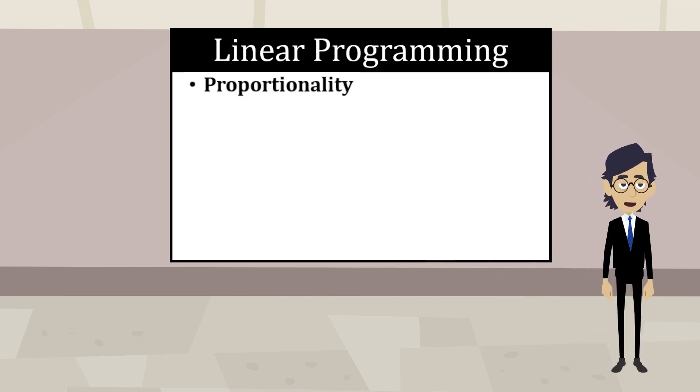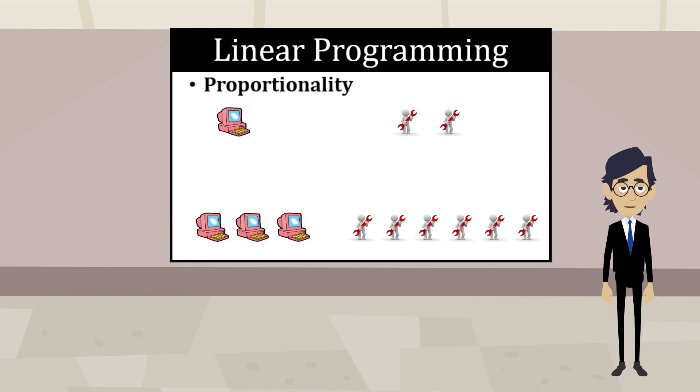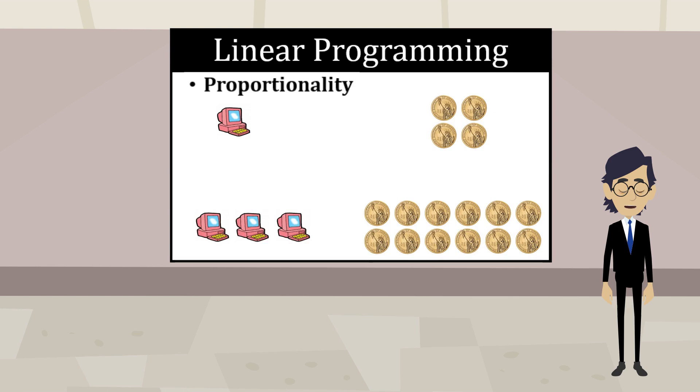Proportionality is the assumption that both the objective function and the constraints, the principle of proportionality must be fulfilled. For example, suppose that for the production of a computer, we use 2 hours of labor. Then, to produce 3 computers, 6 hours of labor will be needed. Or, if for each computer we have a profit of 4 dollars, then for 3 computers, we will have a profit of 12 dollars.